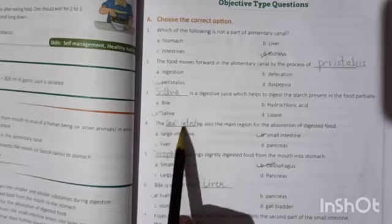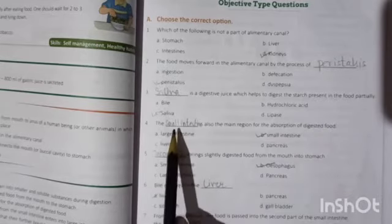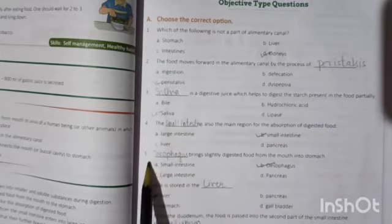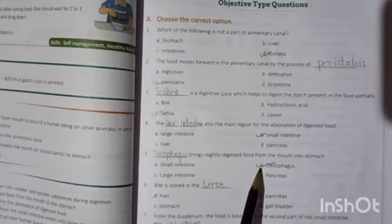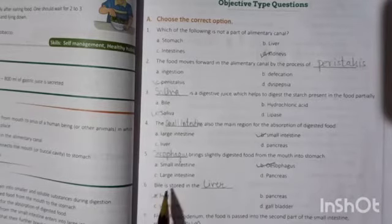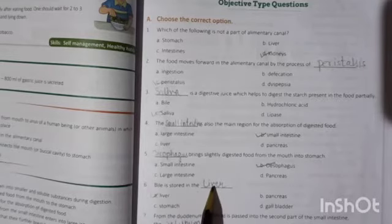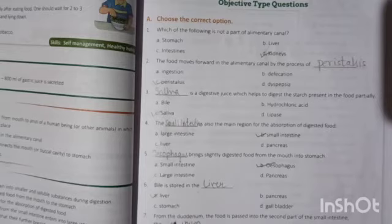Fourth one, the answer is small intestine is also the main reason for the absorption of digested food. The answer is small intestine. Now fifth one, esophagus brings slightly digested food from the mouth into stomach. The answer is esophagus. It is B, option B is the answer. Then sixth one, bile is stored in the liver. L-I-V-E-R, liver. Seventh one, from the duodenum, the food is passed into the second part of the small intestine. The answer is jejunum. J-E-J-U-N-U-M.